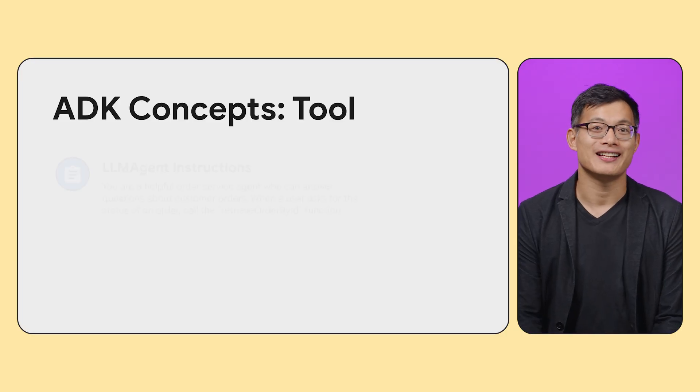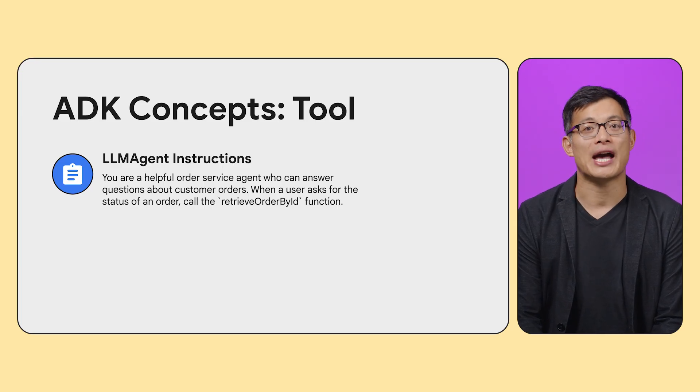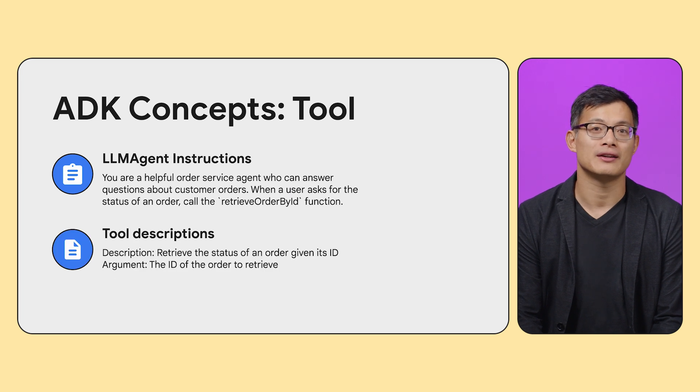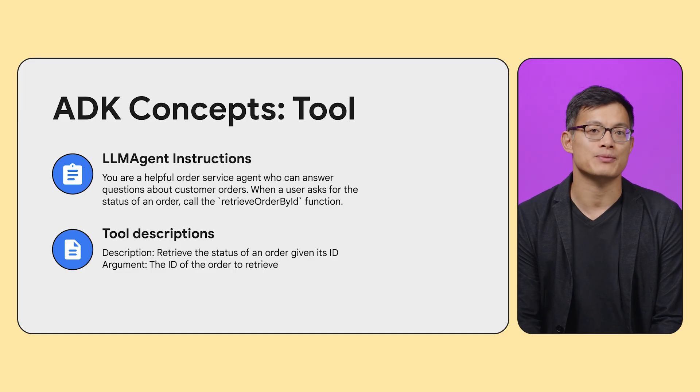Let's chat about prompt quality. It's critical to give precise and explicit instructions to define the agent's purpose, its persona, its goals, and to provide guidance on how it should interact with the user and tools. The tool should also be described with great detail, so that the LLM clearly understands its purpose and its arguments. With these basic steps — adding the dependency, defining tools, creating and configuring your agent, and calling the runner's run method — you can quickly get a functional agent up and running, capable of understanding natural language requests and performing actions through the tools you've defined.